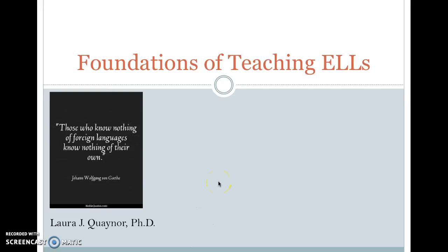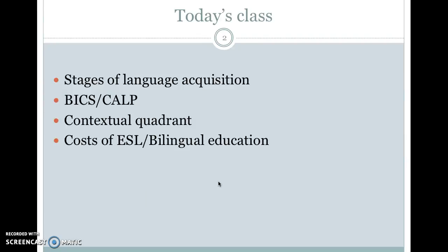Hi everybody, I hope you're doing well. This is our Foundations of Teaching English Language Learners course, and today we're going to be looking at the stages of language acquisition, BICS and CALP, the contextual framework, and the cost of ESL bilingual education. This aligns with chapters 3 and 4 in the Samway and McKeown book, and chapter 1 in the Zuniga Dunlap book.